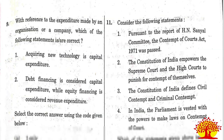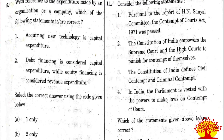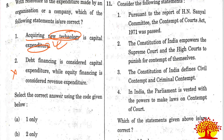Ninth question on expenditure made by organizations: Statement 1 - acquiring new technology is a capital expenditure - absolutely correct. Statement 2 - debt financing is considered capital expenditure while equity financing is considered revenue expenditure - this is wrong. Debt financing is considered revenue expenditure while equity financing is considered capital expenditure. Only statement 1 is correct. Option A is the right answer.